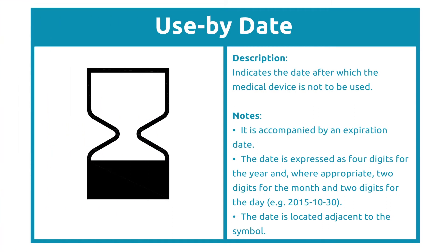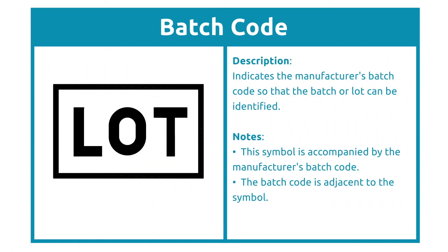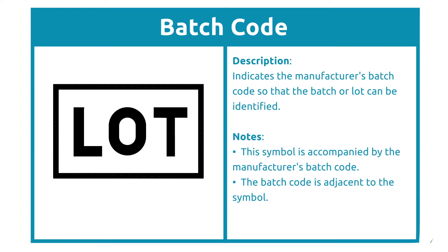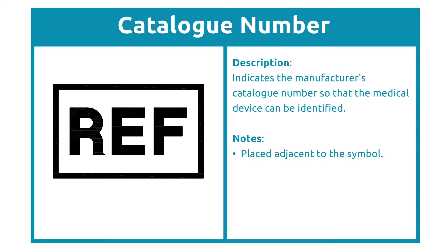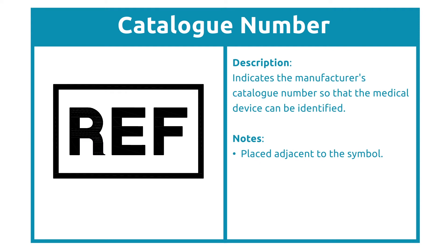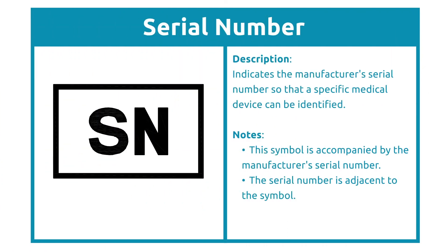The Use By Date symbol shows the product has a shelf life. This symbol must have the 4-2-2 format date as well, and indicates the date by which the product must be used. The Batch Code symbol is an identification marker for the product — the manufacturer's batch code is placed next to this symbol. Another identifying marker is the catalog number, where the manufacturer's catalog number is placed next to the symbol. The third product identifying marker is the serial number.